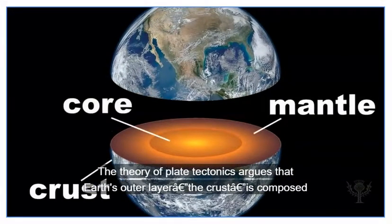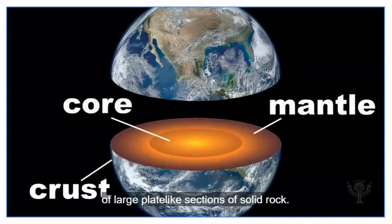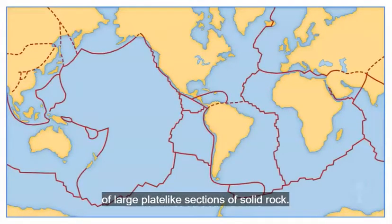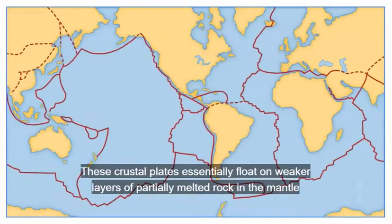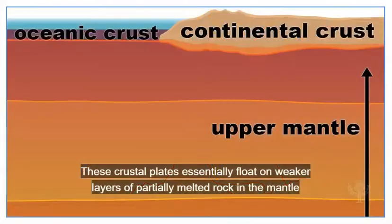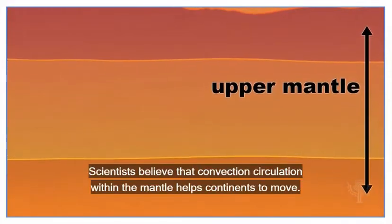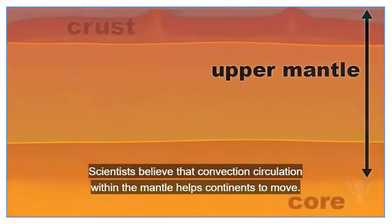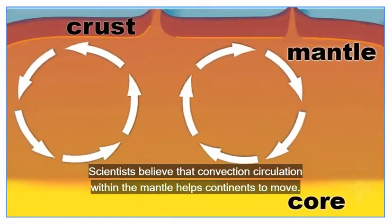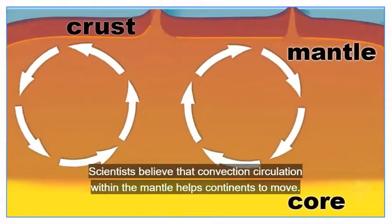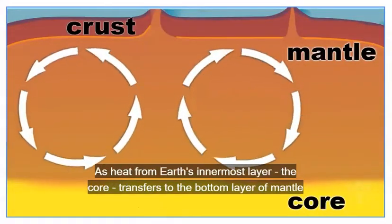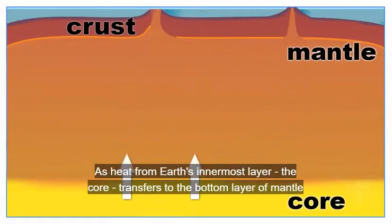But how would such large land masses move? The theory of plate tectonics argues that Earth's outer layer, the crust, is composed of large plate-like sections of solid rock. These crustal plates essentially float on weaker layers of partially melted rock in the mantle below. Scientists believe that convection circulation within the mantle helps continents to move.